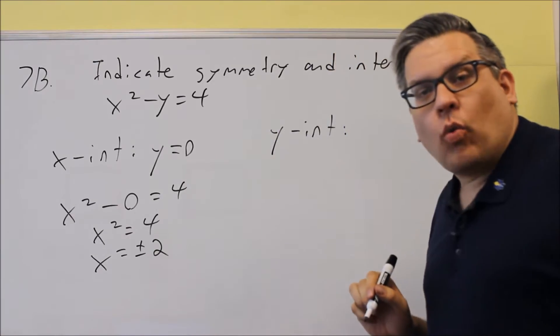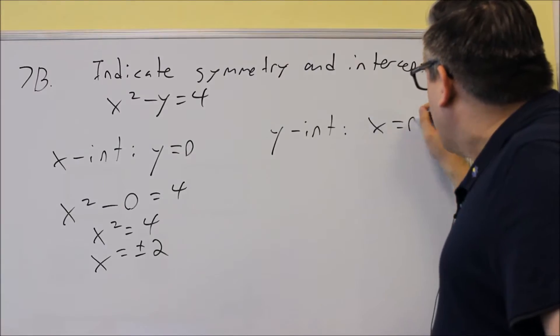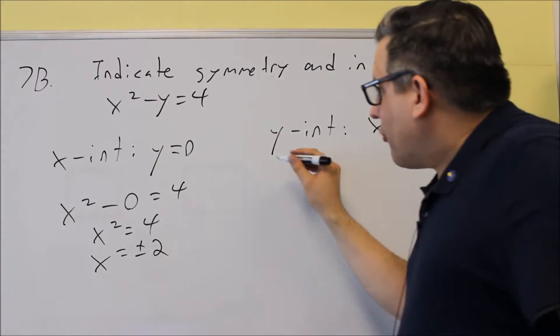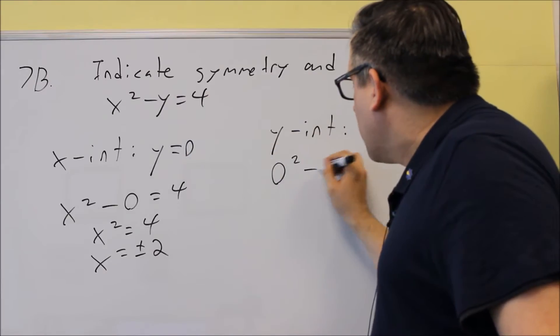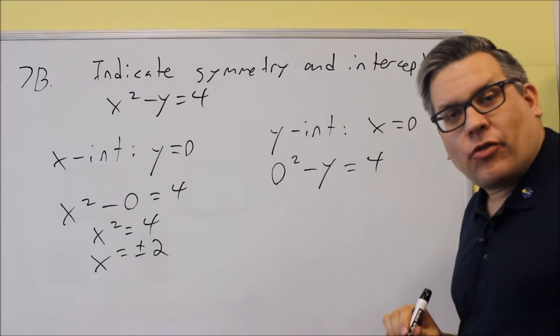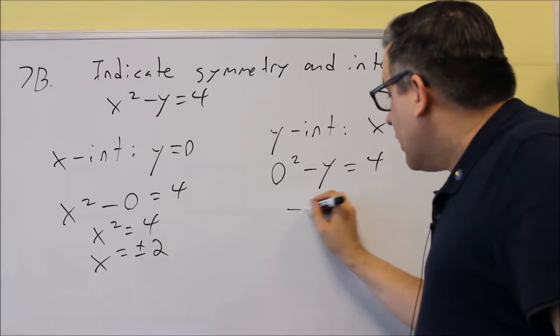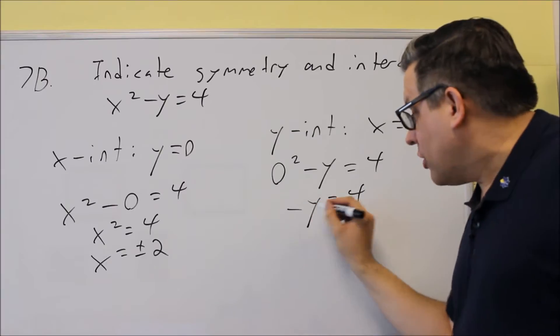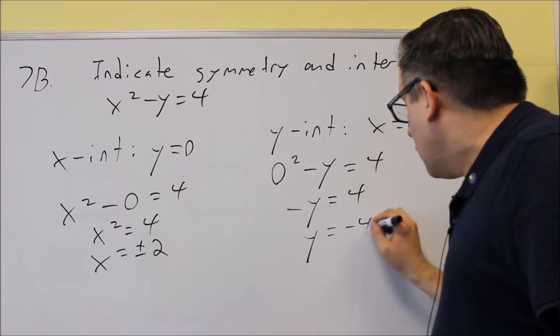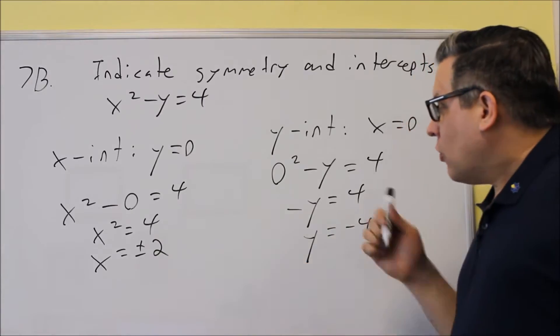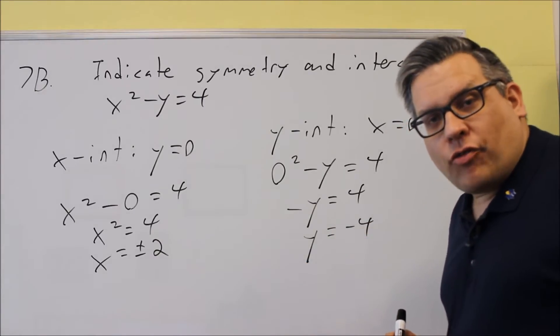We'll now look at the y-intercept. For the y-intercept, you're going to put a zero in for x. So for that, we have zero squared minus y equals 4, zero going in for the x. That leaves you with negative y equals 4, and if you divide both sides by negative 1 to get rid of that negative, you get negative 4. So x-intercepts for this problem will be plus or minus 2. The y-intercept would be negative 4.